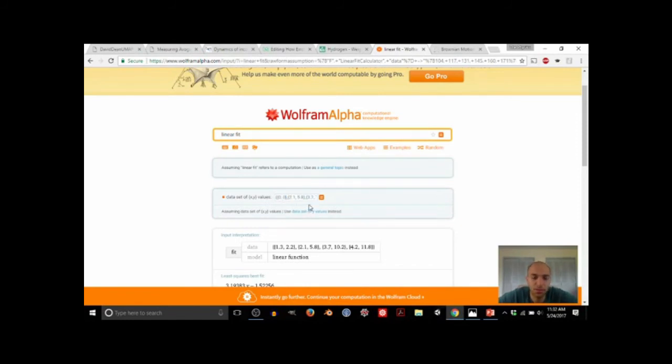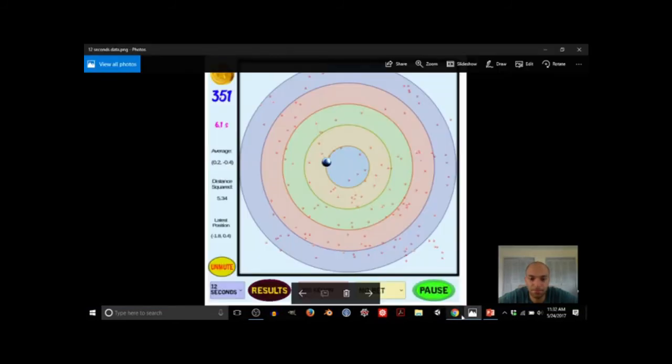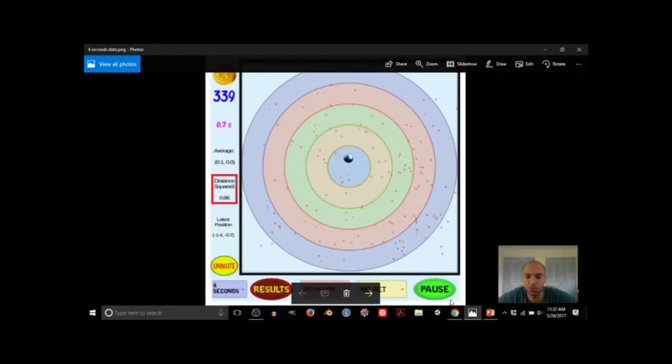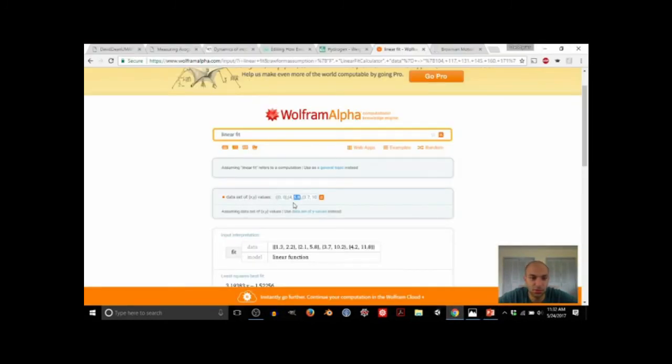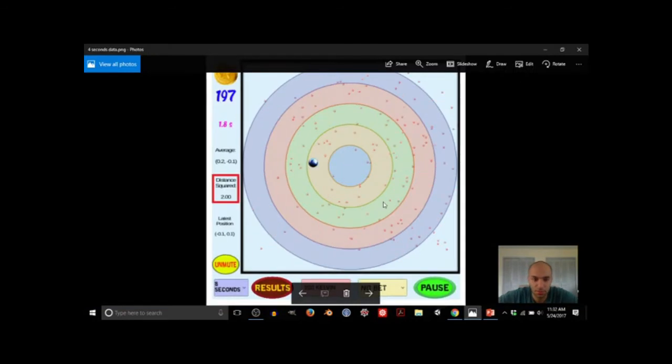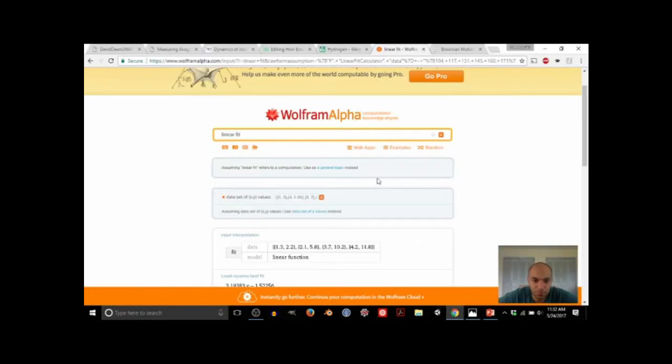At time equals zero, the distance squared should be zero, so you would put zero here and zero here just as a first value. The second value, which we had at x equals 4 seconds, and the distance squared was 0.86, so you put here 0.86. And then at eight seconds we had two. And then that's it, we won't put the last one.